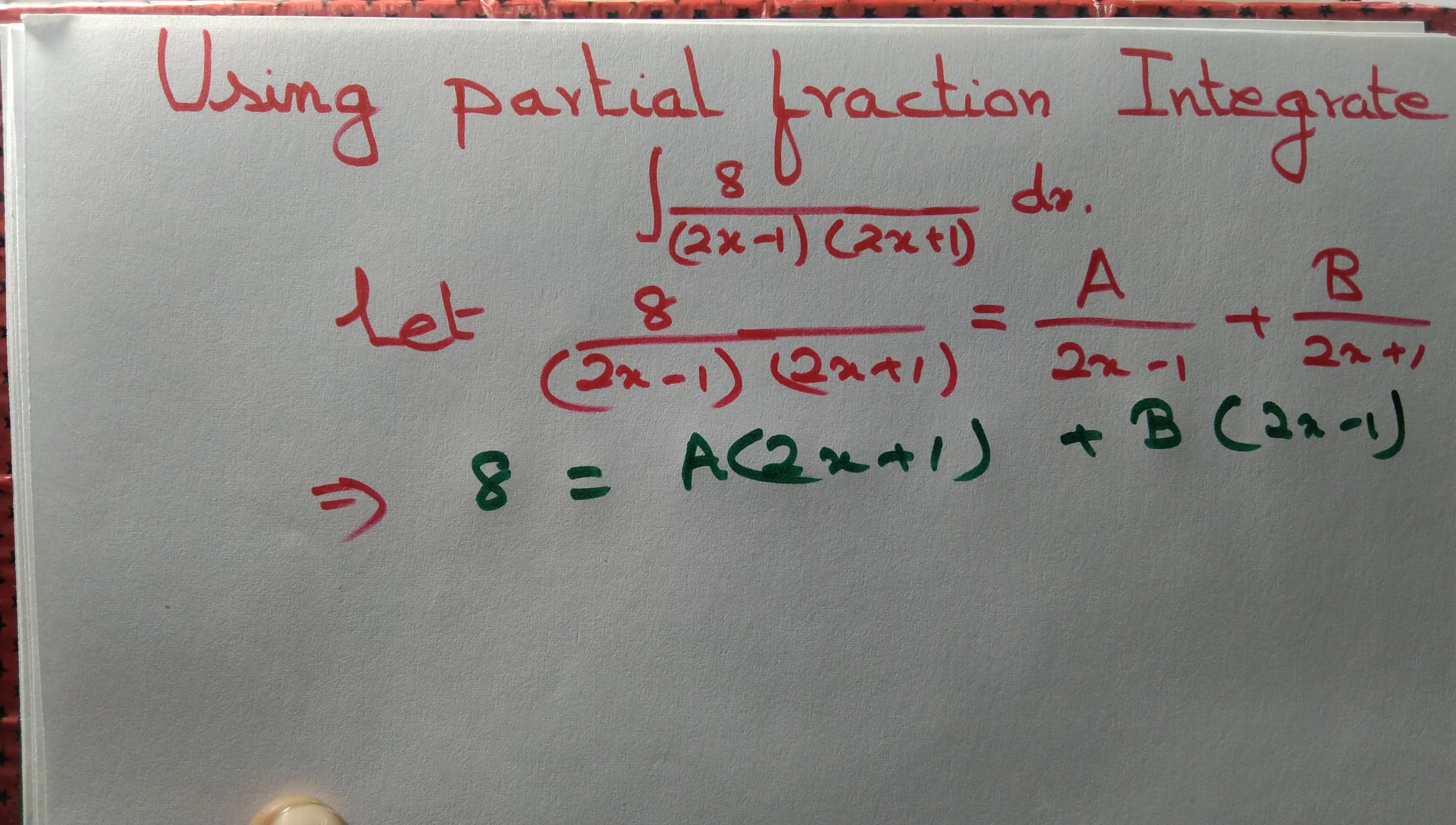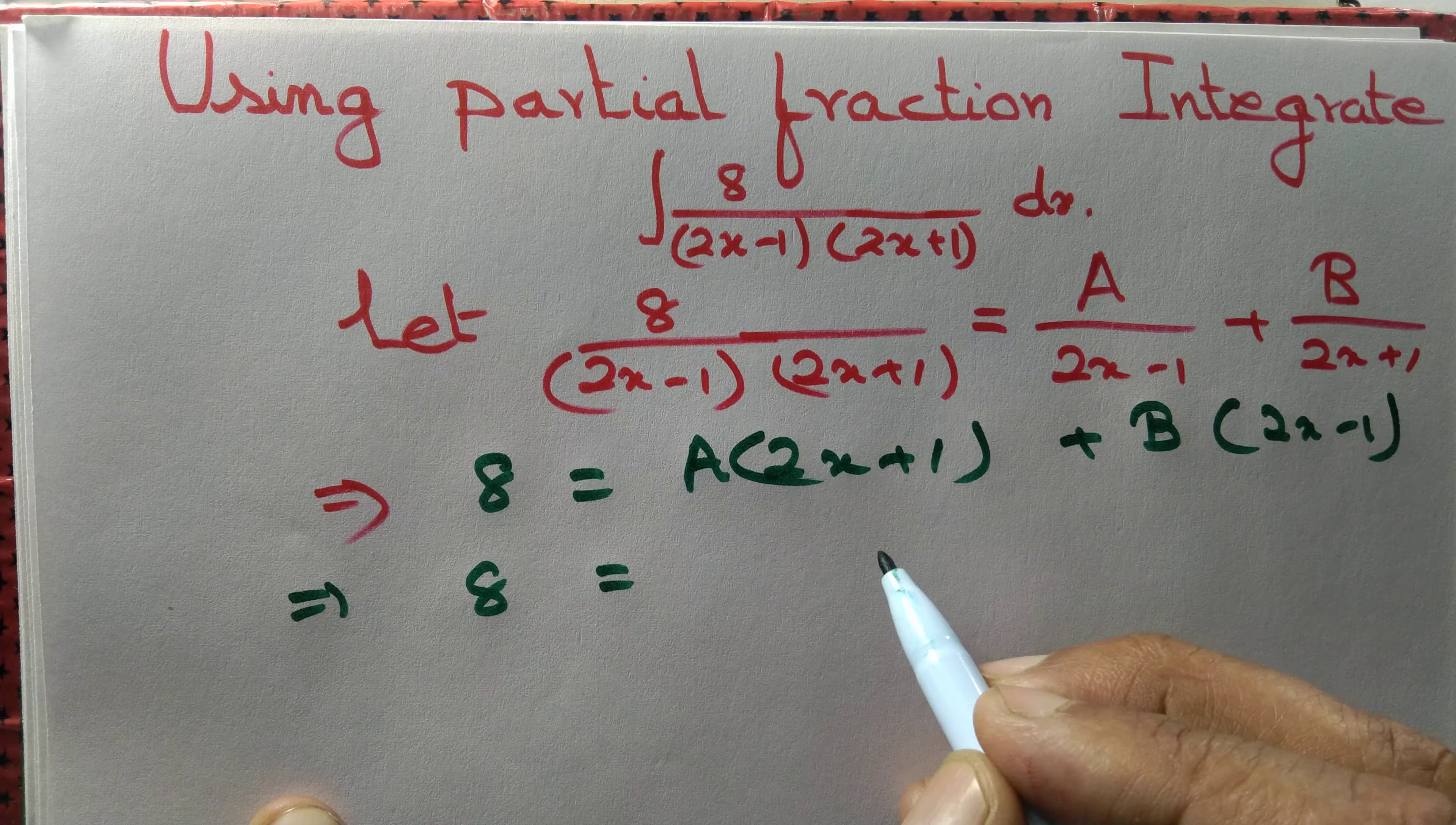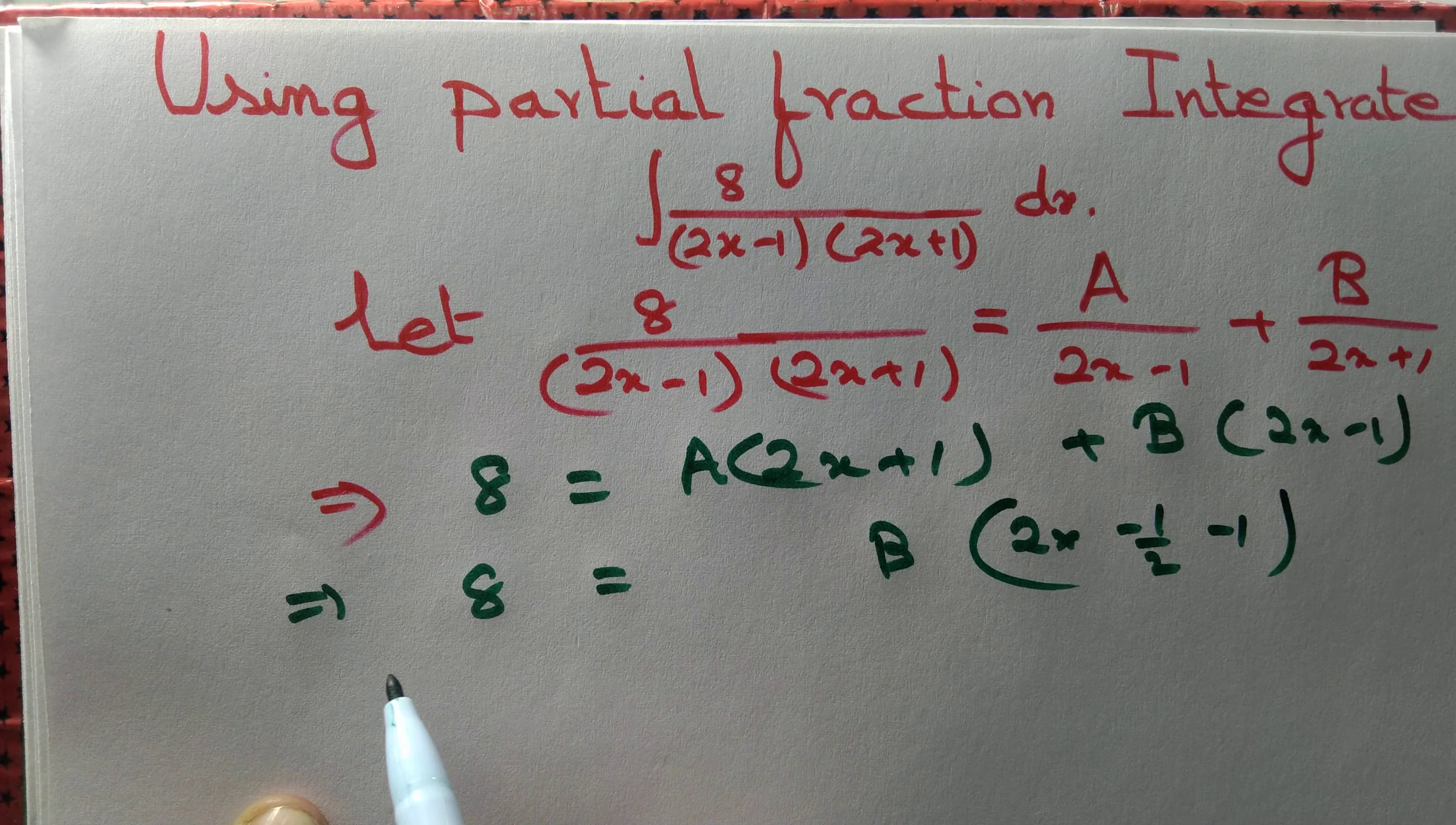Take x equal to minus half. You have 8 equal to, if you take x equal to minus half this will be 0, b into 2 into minus half minus 1. 2 gets cancelled so b equal to minus 4.